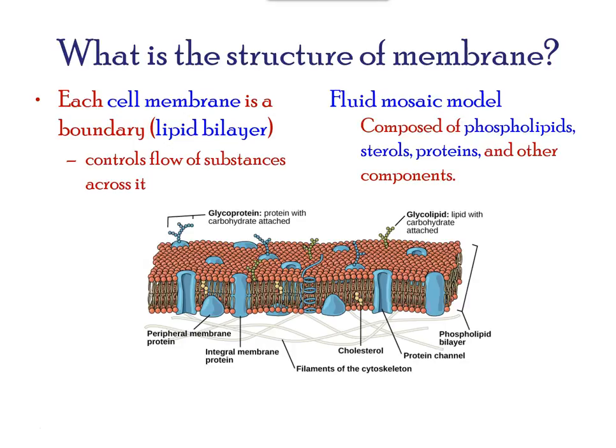Components common to all cells include the plasma membrane; a region where all cellular functions are controlled — called the nucleus in eukaryotes, and the nucleoid region in prokaryotes; and a fluid component where other structures, namely ribosomes, are found in the cytoplasm.